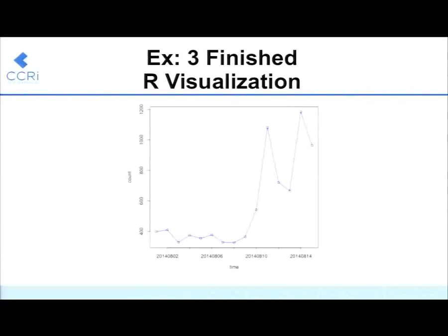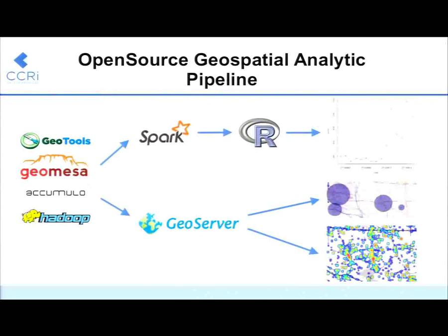That's a quick example of using Spark: along one path we can use Spark and R to build up a time series. On the other hand, our first two examples worked with GeoServer — they were available to the web, people could actually get to them. Can we combine these approaches, or push some of the computation from Spark to Accumulo?